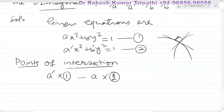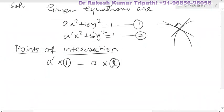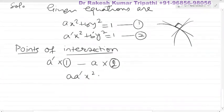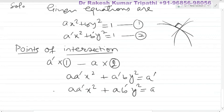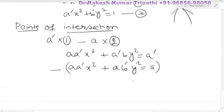If we multiply the first equation by a', it becomes a·a'·x² + a'·b·y² = a'. The second equation, multiplied by a, becomes a·a'·x² + a·b'·y² = a. Now we subtract; the a·a'·x² terms cancel.